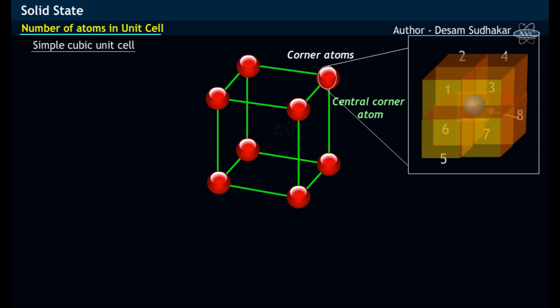That is, this centrally placed corner atom is shared by four unit cells, from one to four at the top, while four other unit cells from five to eight are shared at the bottom.